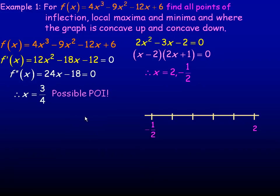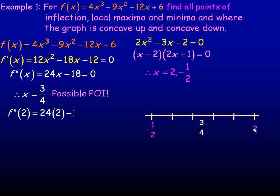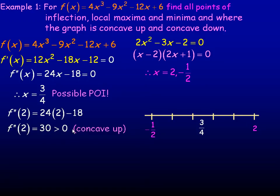So that's a possible point of inflection. We'll put 3 quarters on the number line. Now I want to check for concavity — finding the value of the second derivative to the right and to the left of 3 quarters. We have critical points on both sides, so those are good places to check. Finding the second derivative at x equals 2: that's 48 minus 18, which is 30. The fact that it's positive — greater than 0 — means the graph is concave up there, to the right of 3 quarters.